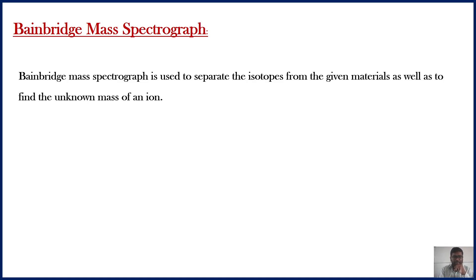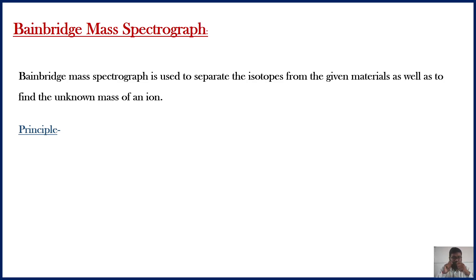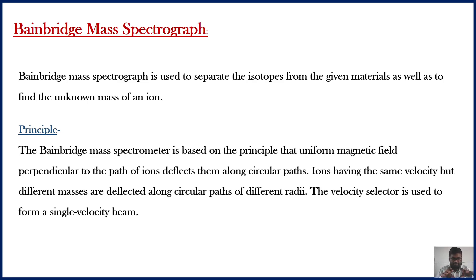Now, what is the principle behind the Bainbridge mass spectrograph? We know that whenever a charged particle, or we can say an ion, is moving through a region where a perpendicular magnetic field is applied, then due to the perpendicular magnetic field, the ion or charged particle takes a circular path and the radius of that circular path is proportional to the mass of the ion. Also, we have discussed the concept of velocity selector. The velocity selector is generally used to form a single-velocity beam, and this is generally the principle of Bainbridge mass spectrograph.